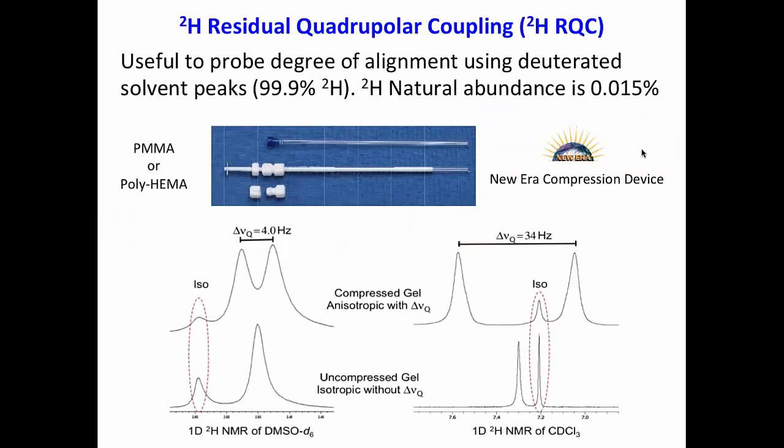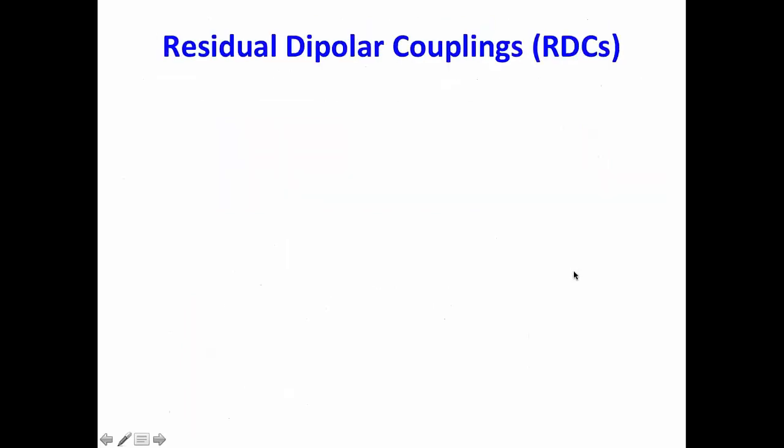In the case of residual quadrupolar coupling, the natural abundance of deuterium is very low, 0.015%. But right now, how we use them? We use the solvent peak, and the solvent peak that is 99.9% deuterium, we use the solvent peak to see if we generate or not anisotropy. Here you can see a gel that is in the compression device that is relaxed. This is a DMSO gel. This is a chloroform gel. And when you compress, you see the quadrupolar couplings.